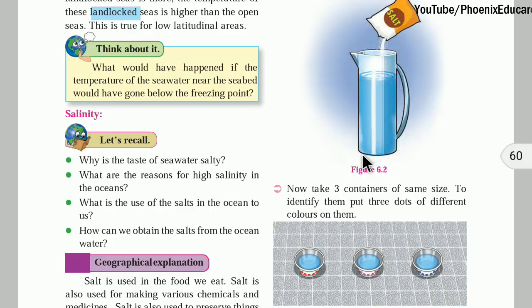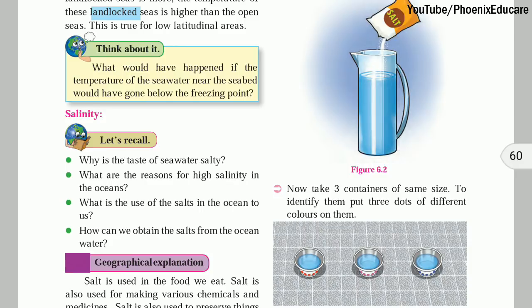The places where the salinity is more — if we add fresh water to the water, the salinity will be reduced. The places where the seawater gets more supply of fresh water from lakes and rivers will have reduced salinity. The sea where more rivers meet will have reduced salinity. Temperature also matters: if the temperature is higher, evaporation is more, so salinity is also more. If the supply of fresh water is more and temperature is less, the salinity will be less. If the supply of fresh water is less and temperature is more, the salinity will be more.